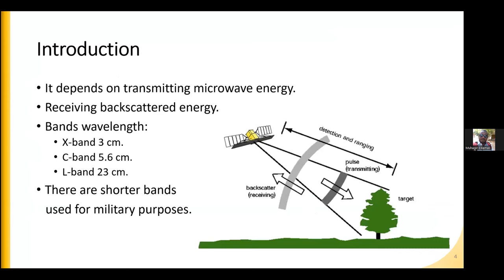Since microwave remote sensing is active, it depends on transmitting its own microwave energy and then receiving the backscattered energy from the target. The radar system contains two paths: the transmitting and receiving path. The most commonly used wavelengths are the X band at 3 centimeters, C band at 5.6 centimeters, and L band at 23 centimeters. There are also shorter bands less than 3 and 1 centimeter that are used for military purposes.